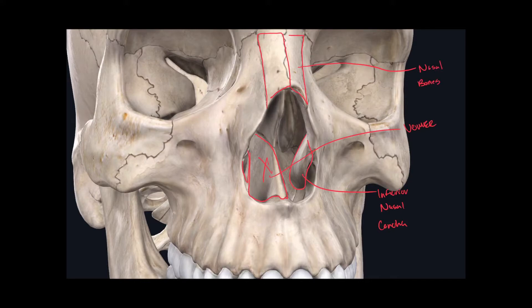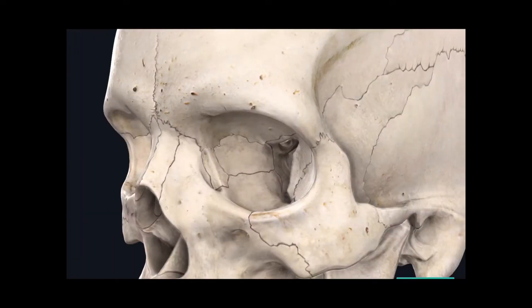If we go directly lateral from the nasal bones into the bony orbit, we can see another pair of small bones found in the visceral cranium. These are the lacrimal bones.